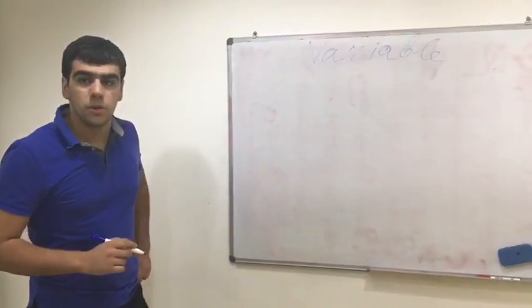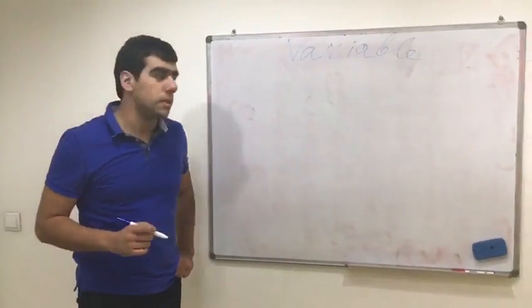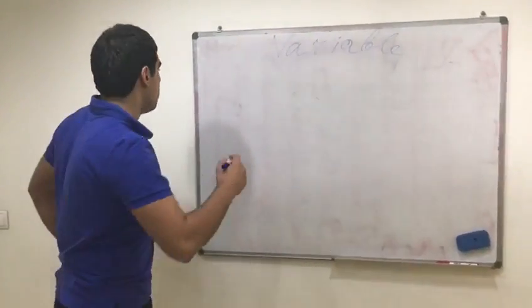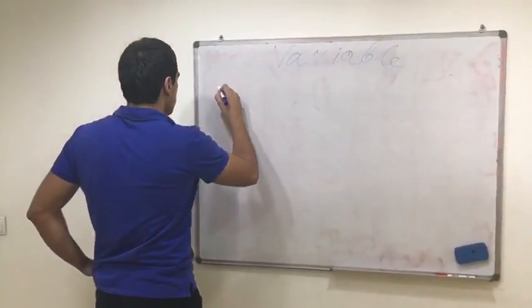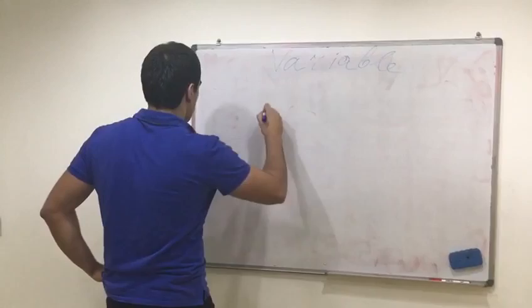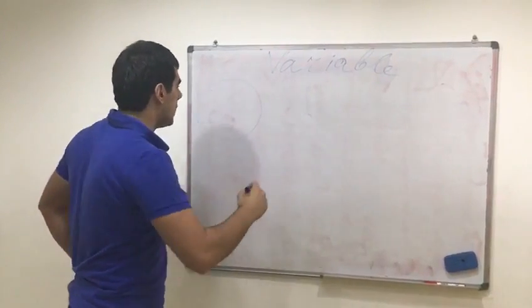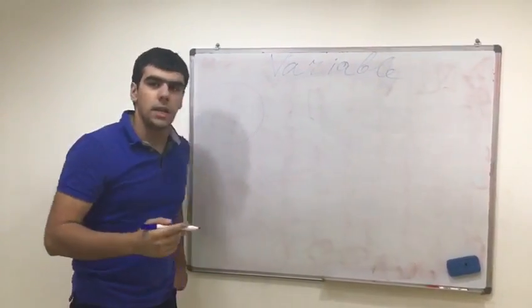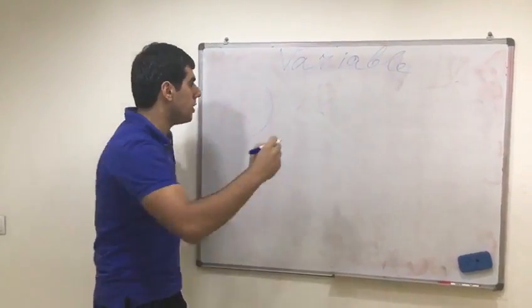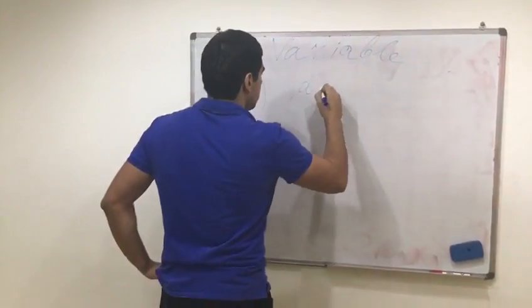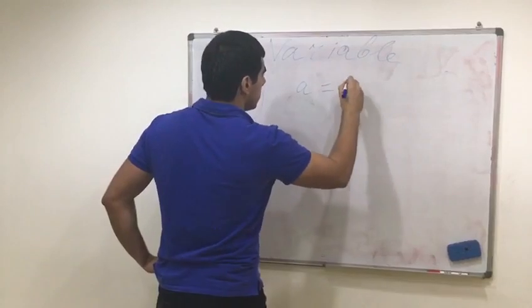Now I'm going to talk about variables. So let's imagine a circle. So let's take any number. For example, A is equal to 7.